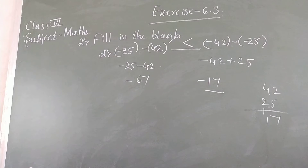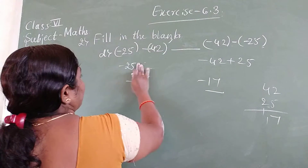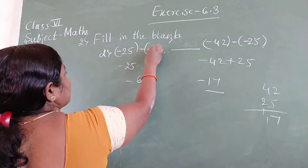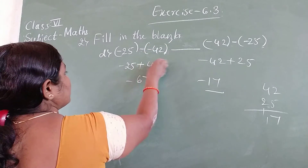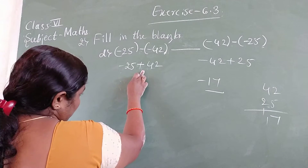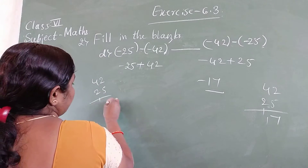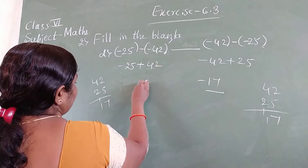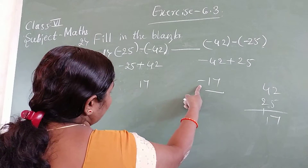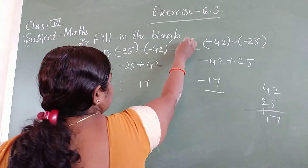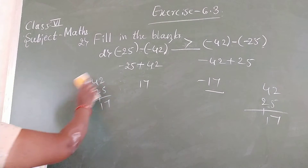Sorry, I made a mistake. The second expression is minus 42 minus minus 25. Minus into minus becomes plus, so it becomes minus 42 plus 25. Different signs, go for subtraction: 42 minus 25 equals 17. This result is positive and the other is negative. Positive numbers are always greater than negative numbers, so put the greater than symbol.